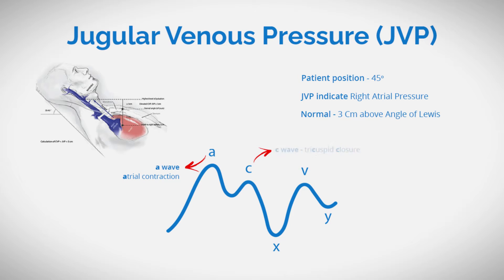The C-wave, a subtle rise during ventricular systole, is caused by tricuspid valve closure. The X-descent follows, representing atrial relaxation and a subsequent pressure drop.